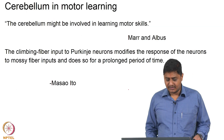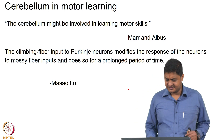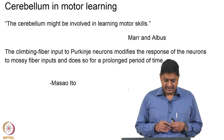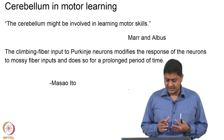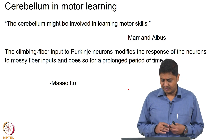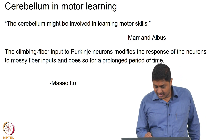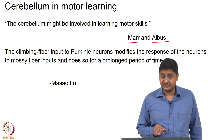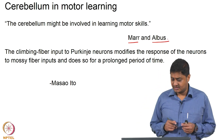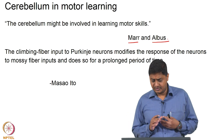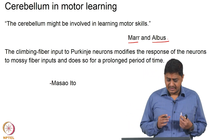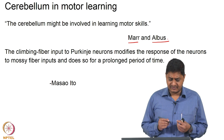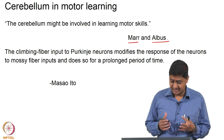For a long time since the 1950s, 60s, and probably the 70s, it was believed that the cerebellum might be involved in the learning of motor skills independently. Marr and Albus proposed their theories and these theories continue to dominate the notion that the cerebellum forms an important part where motor skills might be learnt.